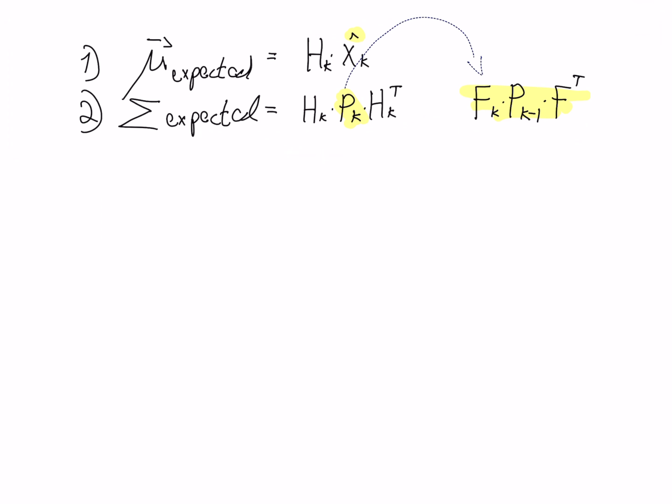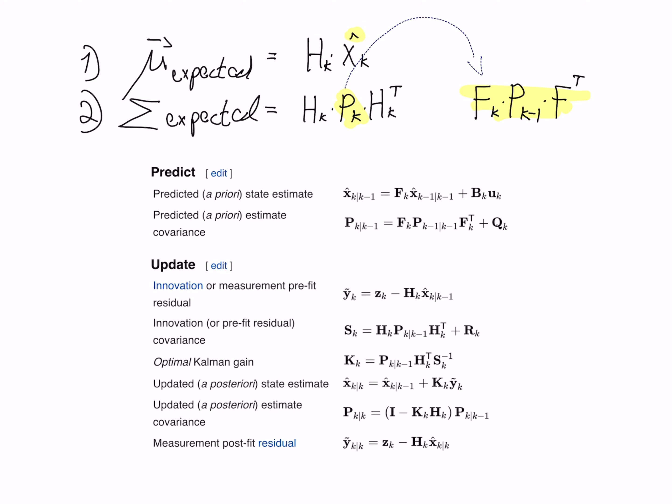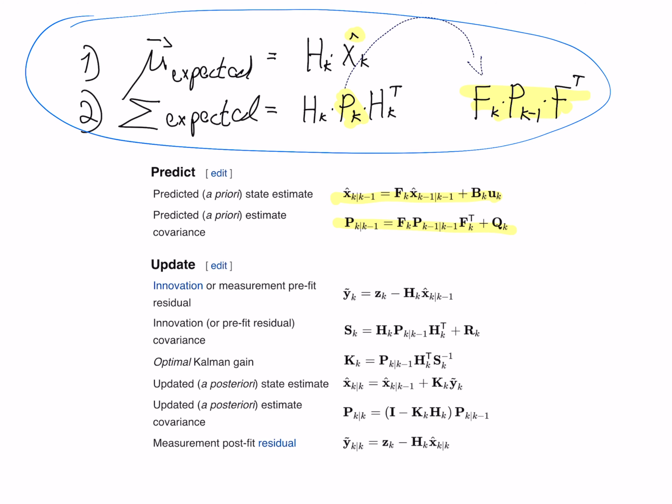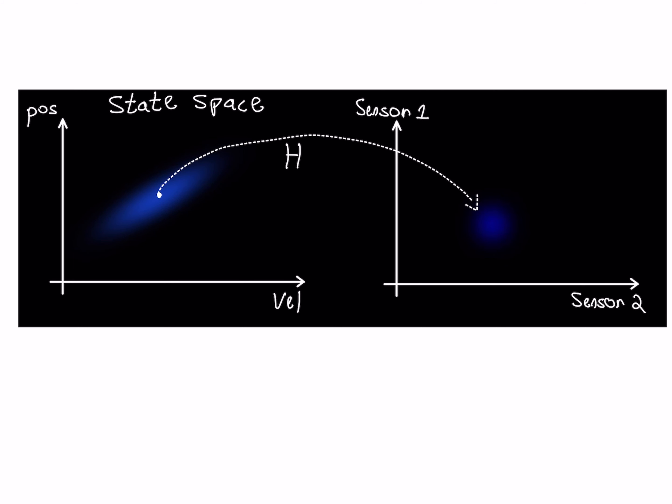We are in the last video in the Kalman filter equation series — these are the full Kalman filter equations from Wikipedia. So far we are familiar with and understand the first two, and we understand mu expected and sigma expected as we can see from the sensors. This video will be devoted to the last five equations.